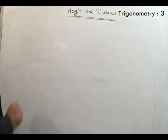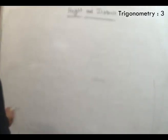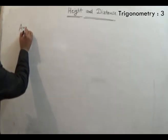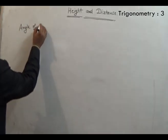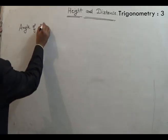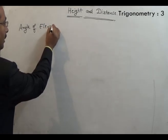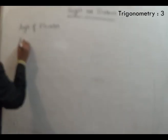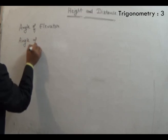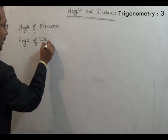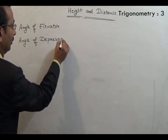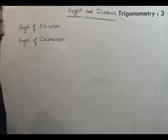In this concept we have two types of angles. The first is known as angle of elevation and the second is known as angle of depression.